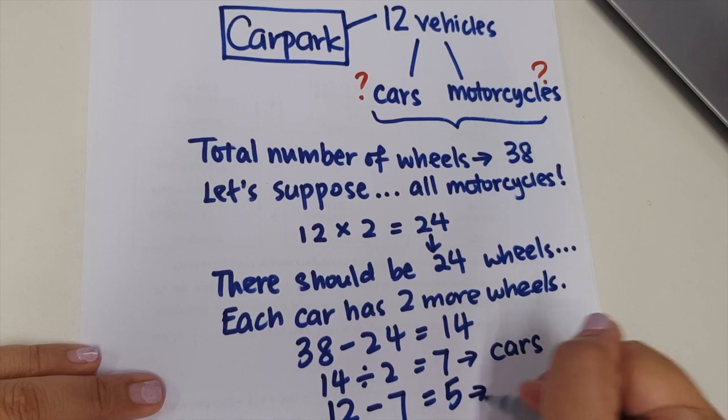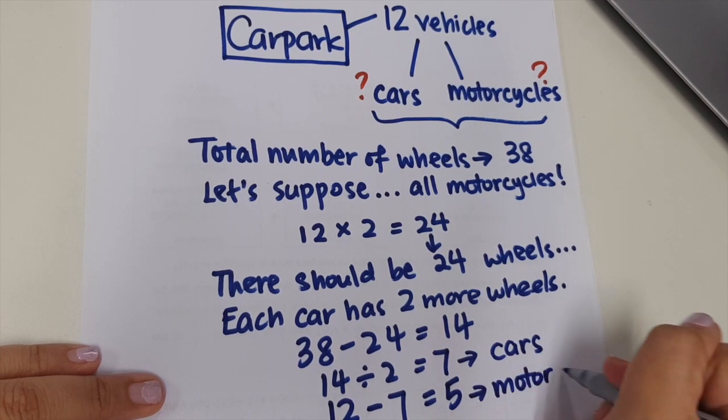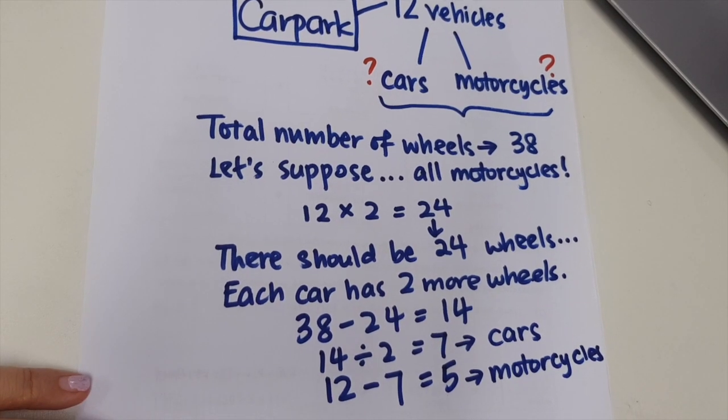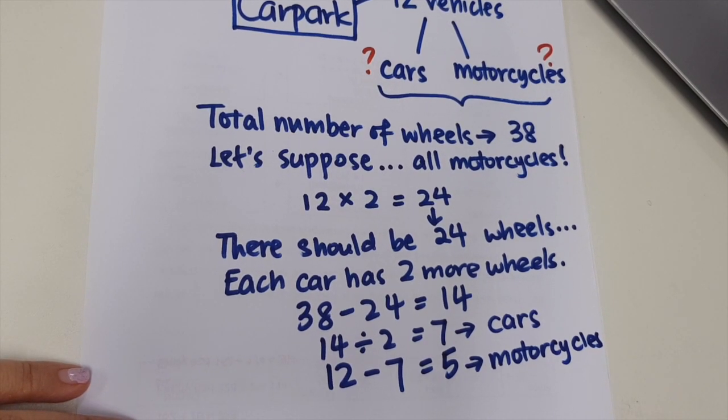And then I take the difference. So the 12 vehicles, I take the difference, which is 12 minus 7. I find that there are five motorcycles.